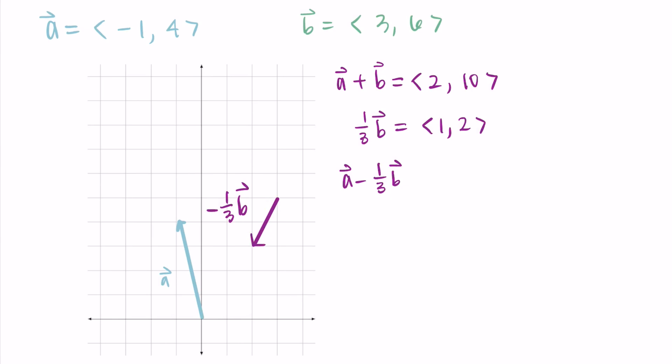And now my movement goes negative one on the x and negative two on the y. And now I'm going to place the negative one third b tip to tail with the a vector. I can draw in my resulting vector starting at the beginning of a and ending at the end of negative one third b.